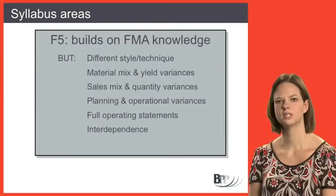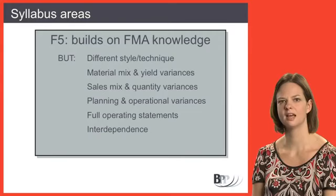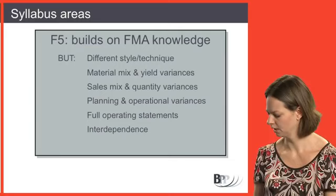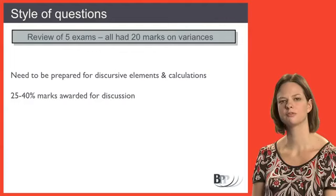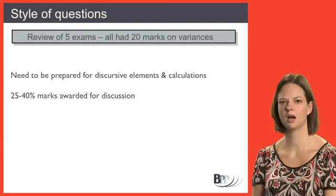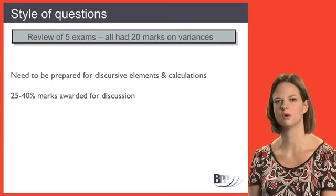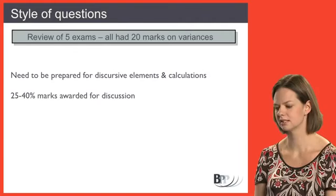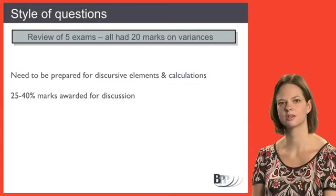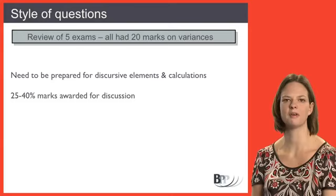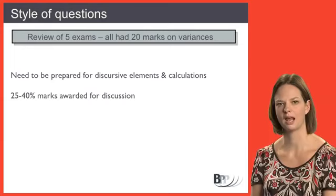Something else which is very critical at F5 is the interdependence of variances, so thinking about discursive elements as well as actually being able to perform the calculations. Undertaking a review of five exams sat from June 2009 to June 2011, all five contained a 20 mark question on variances, so it's an absolutely critical topic area. In these papers, 25% to 40% of the marks awarded were for discussion, so it's not enough to just be prepared for the calculations.